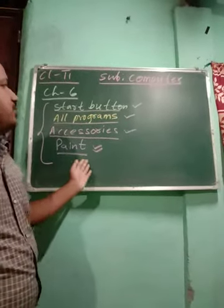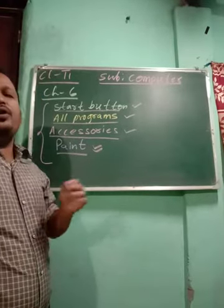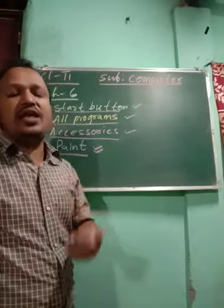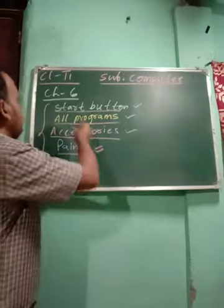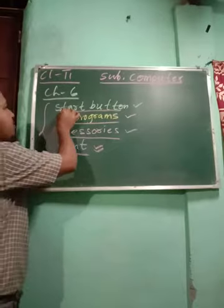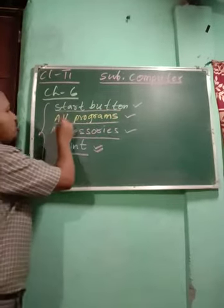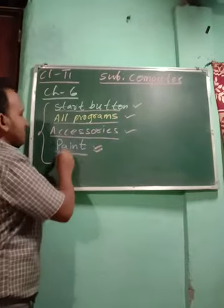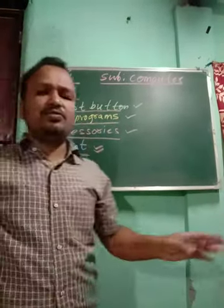These are the steps that are required, so you have to remember — when you have your own computer, to start Paint, what you have to do, where you have to go. First you click on the Start button, then go to All Programs, then click on Accessories, and finally on Paint.